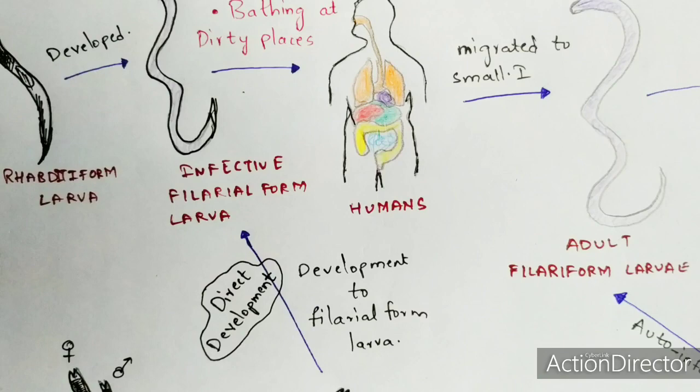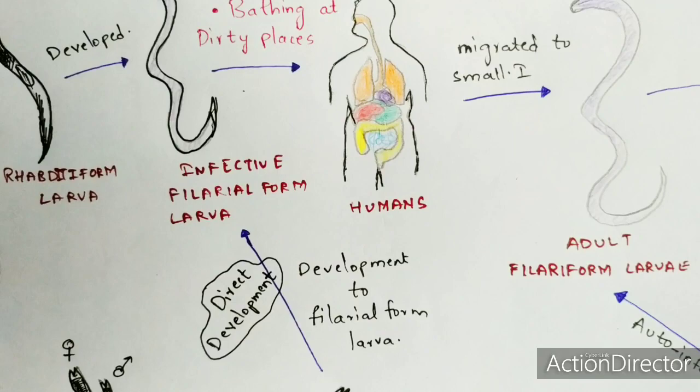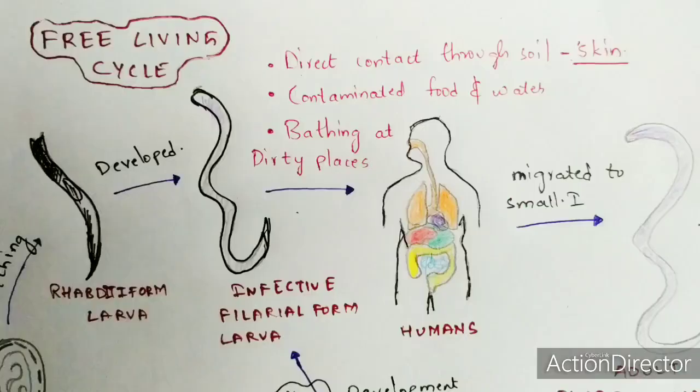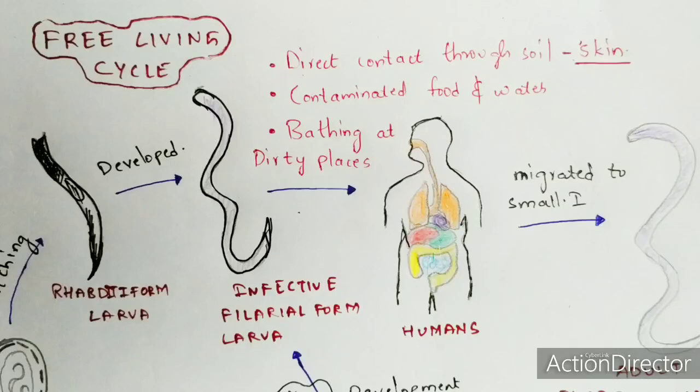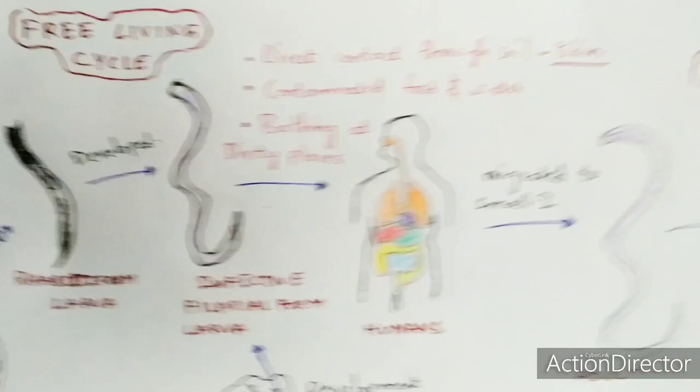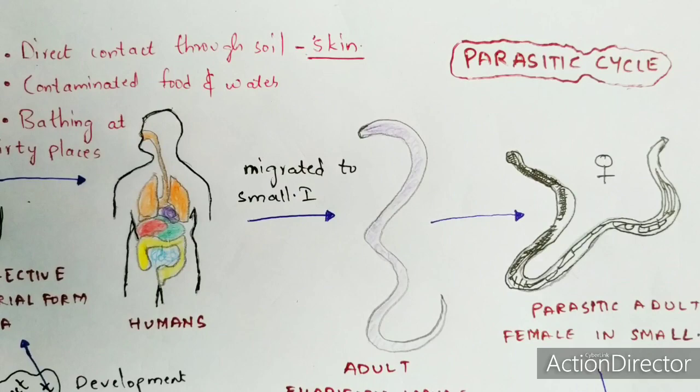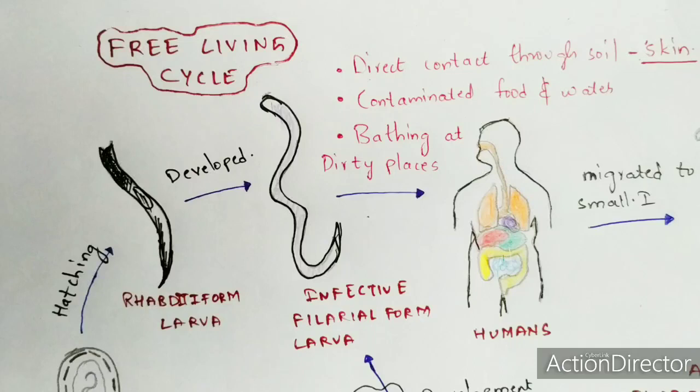The free-living life cycle occurs in the external environment, while the parasitic cycle occurs within the internal environment of the human host. Hence it is called the parasitic cycle, and the external one is called the free-living cycle.